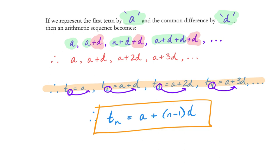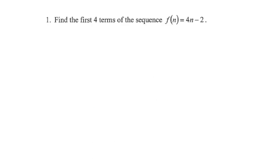I want to spend some time jumping in and playing around with some problems now. Question one asks us to find the first four terms of the sequence, and it's given us the general term. I want you to pause it now — we'll use this as a check to see where we're at with some previous knowledge. Okay, we're back. As a reminder, I could find F of one by subbing in one for N. That gives me four minus two, which is two.